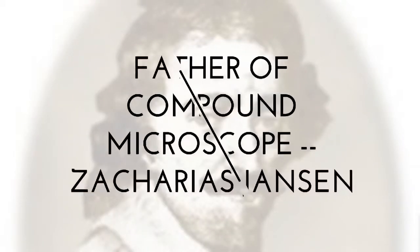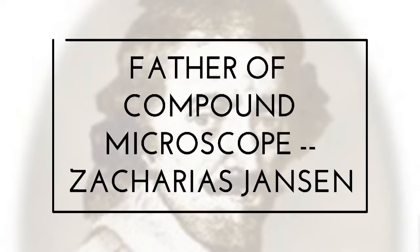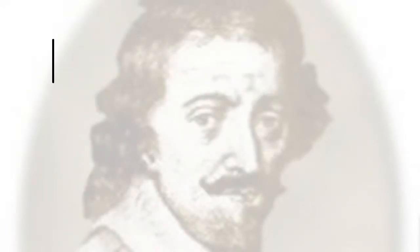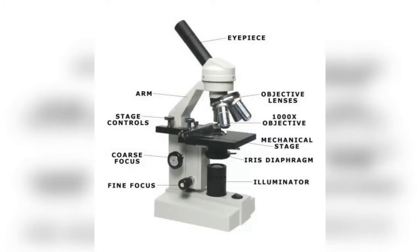The father of the compound microscope is Zacharias Janssen. A well-labeled picture of a compound microscope shows the eyepiece, objective lenses, mechanical stage, iris diaphragm, illuminator, fine focus, coarse focus, and arm.